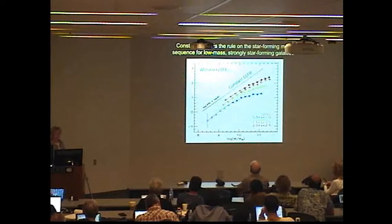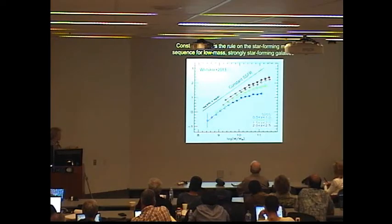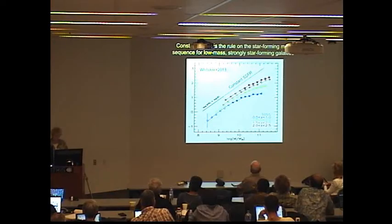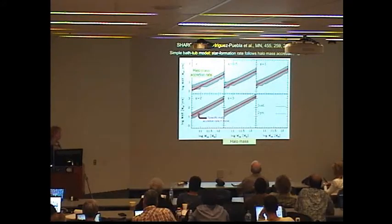We've seen constant specific star formation rate before. It's the rule on the bottom low mass end of the star forming main sequence. Strongly star forming galaxies, which are low mass galaxies, have a slope here in this diagram that's consistent with constant specific star formation rate. And we even think we have a theory for this. This is a very simple galaxy formation model that we've worked on here at Santa Cruz, led by Aldo Rodriguez Puebla, and we call it Shark.